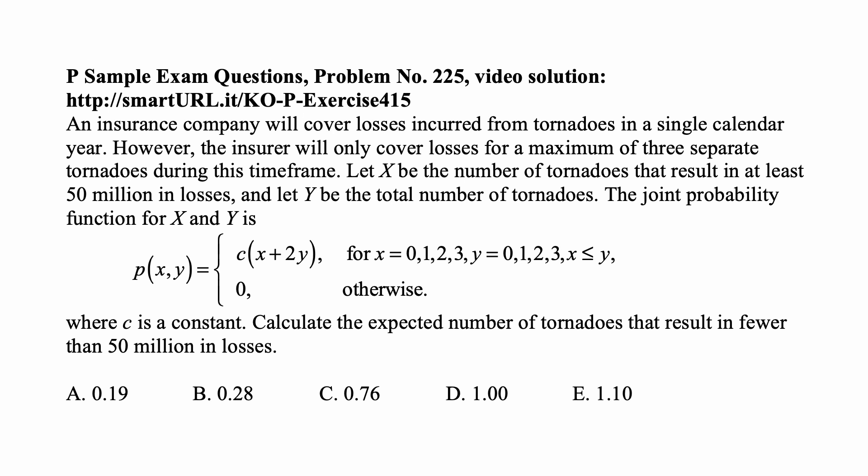Let X be the number of tornadoes that result in at least 50 million in losses, and let Y be the total number of tornadoes.